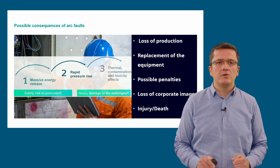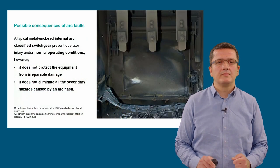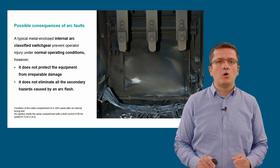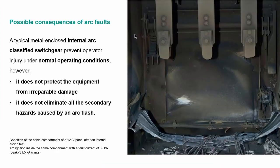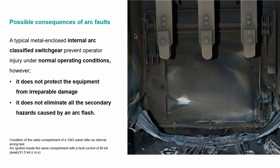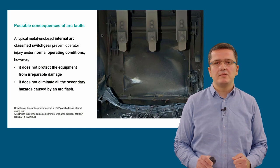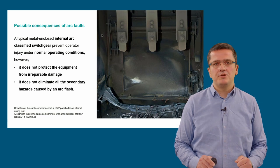Accordingly, possible consequences on the equipment, processes, and human beings are various. An internally classified switchgear can prevent operator injury under normal operating conditions, which is the status where all doors and covers are closed as per IAC. But it does not protect the equipment from damage and does not prevent the occurrence of secondary hazards like pressure wave, sound blast, blinding light, fire, toxicity, contamination, etc.